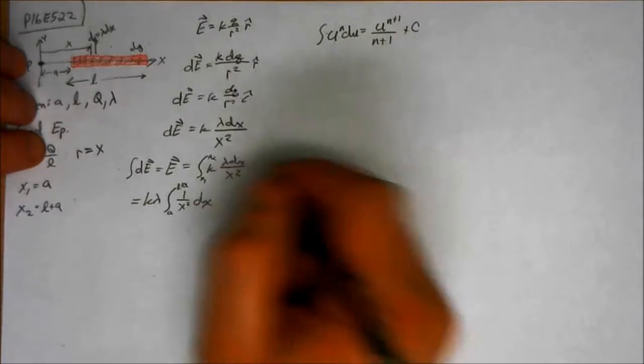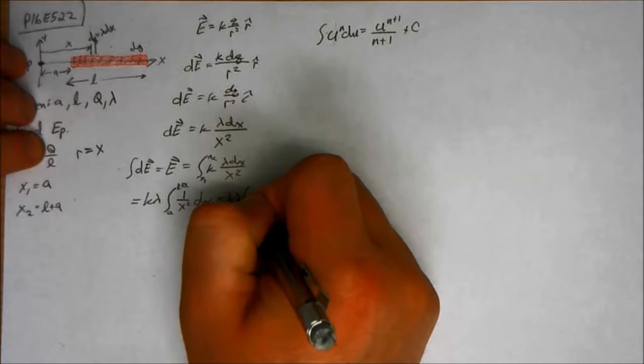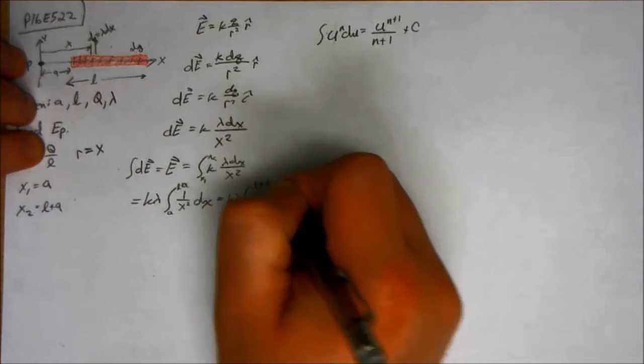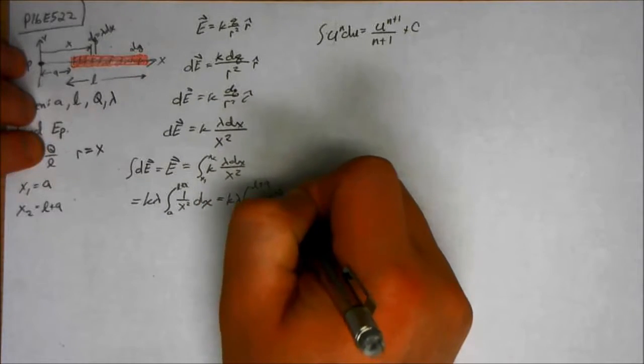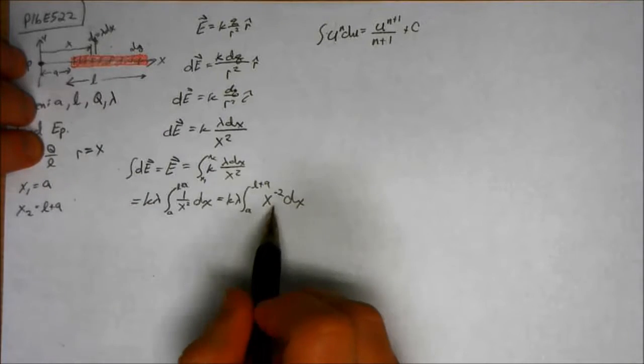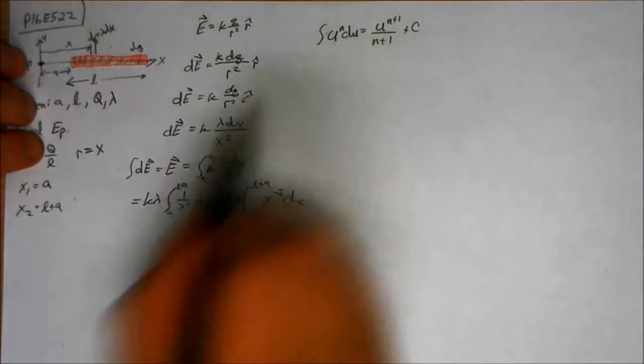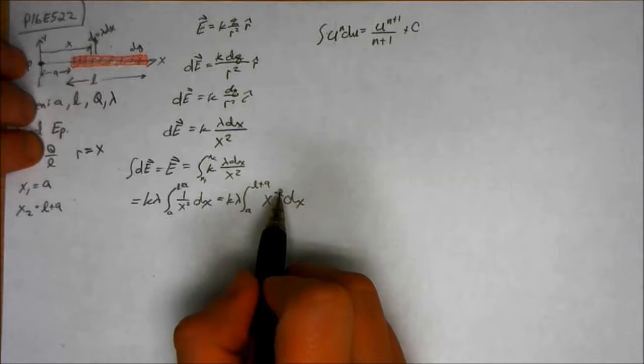So over here, this is the same as K lambda A L plus A, x to the negative 2 dx, where N is negative 2 there.